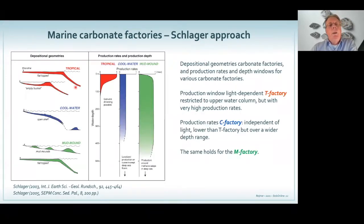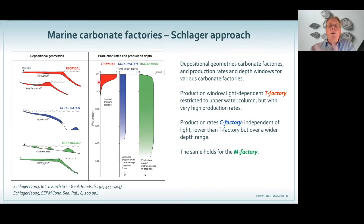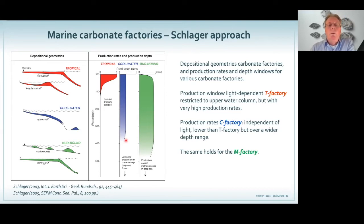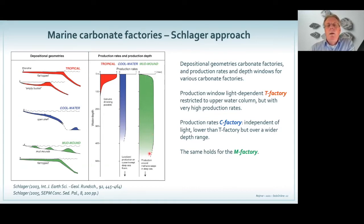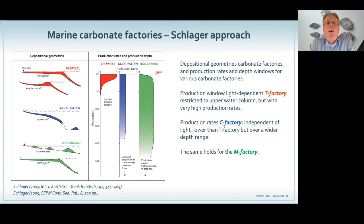Schlager also developed depositional geometries that could emerge from each factory strategy. When you look at production rates and production depths, you see that tropics are really restricted to the upper part of the water column because light is their main requirement. When you move to the cool water, production rates are less but they have a broader water-depth range. The mud mound factory doesn't show up in the upper water column because it couldn't resist waves, but it has a very high production rate to very large depth. Even around methane seeps, you will find microbes that can produce carbonates.